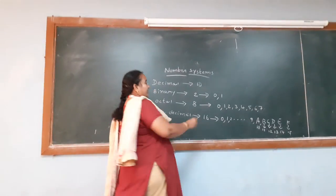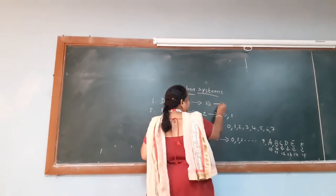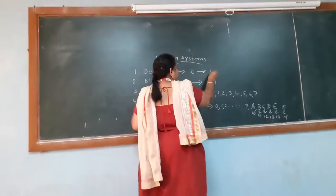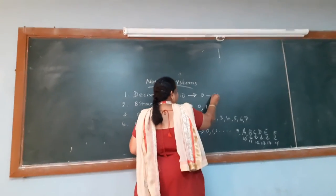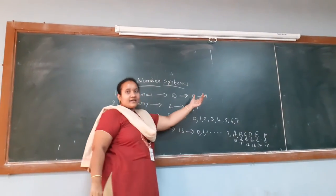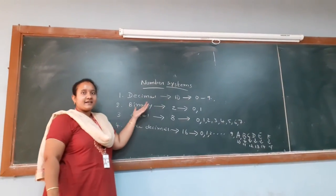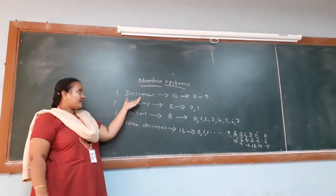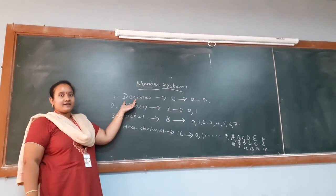In decimal, we have only 10 digits from 0 to 9. By using 0 to 9, we can represent any number in decimal format.